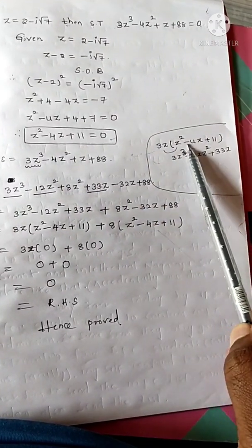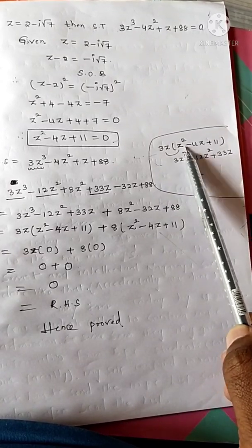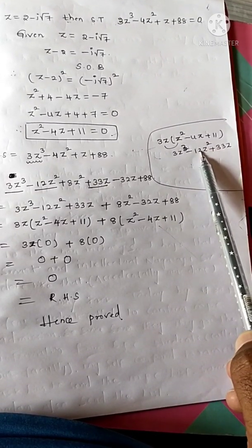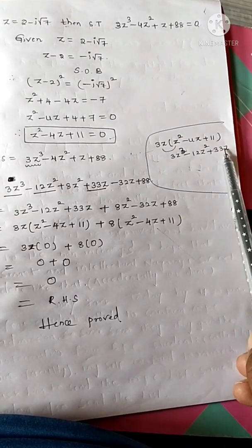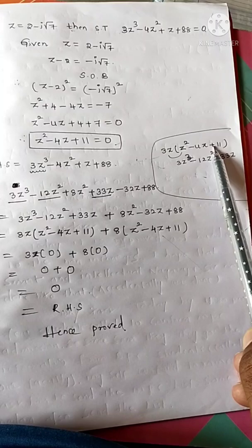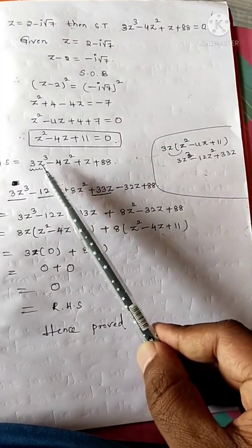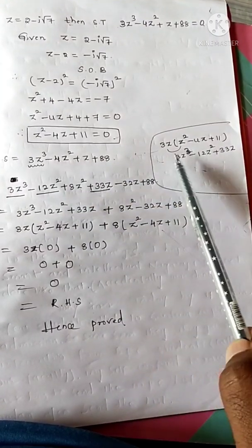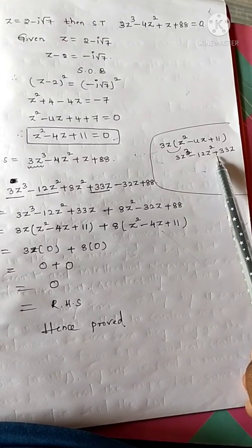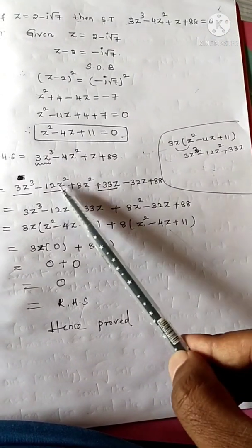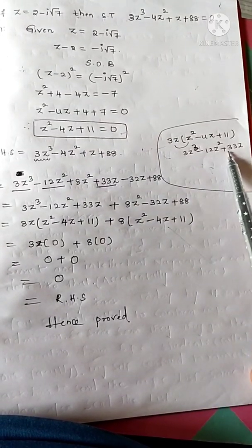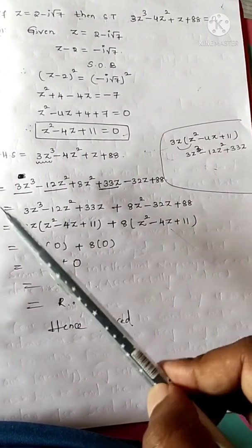Looking at 3z cube: 3z cubed gives 3z squared minus 4z. Taking 3z as common, 3z cubed equals 3z times z squared. Using the relation z squared minus 4z plus 11 = 0, we adjust: 3z cubed minus 12z squared plus 33z. We need to adjust to get minus 12z squared — adding and subtracting terms as needed.